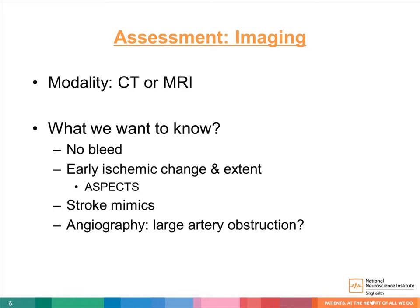In addition to clinical examination, there must also be an imaging assessment. A brain CT or MRI is done in the hyperacute phase. What we want to know are: there is no acute or subacute hemorrhage, the presence and extent of early ischemic change — and the ASPECTS score can help us to determine this — and any possible signs on imaging of a stroke mimic. If an angiogram is performed, one should note the presence of a large artery obstruction to assess suitability for endovascular treatment.